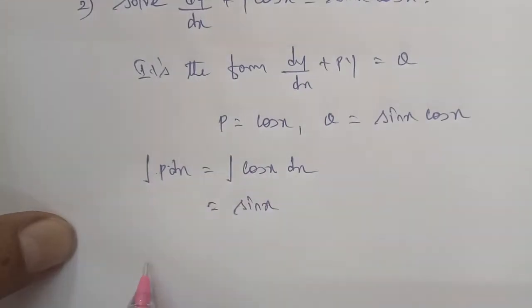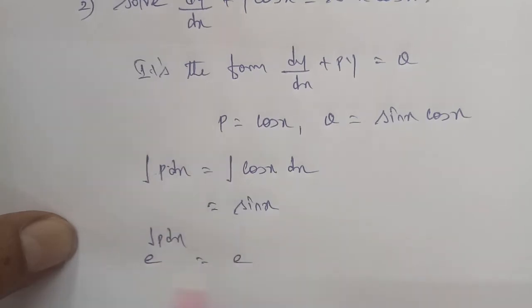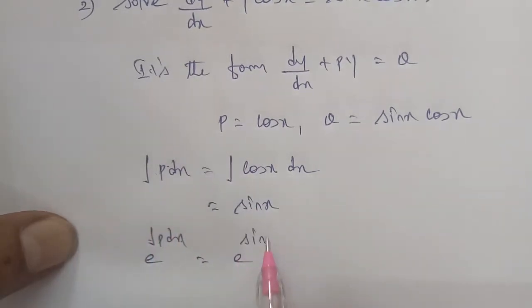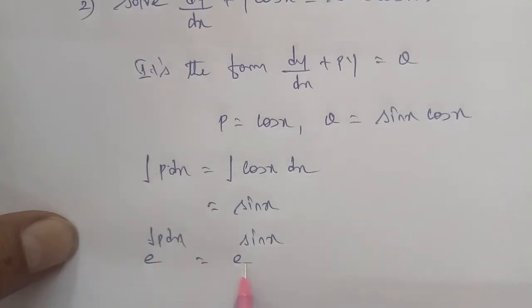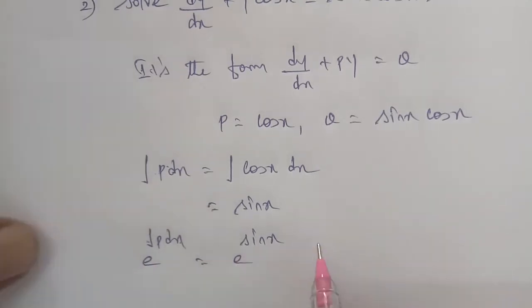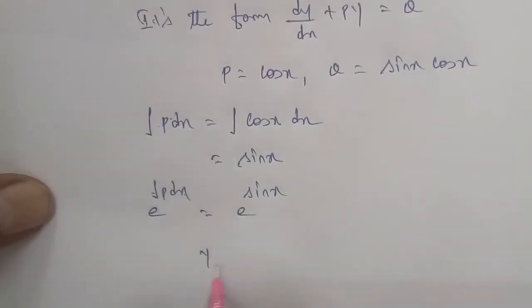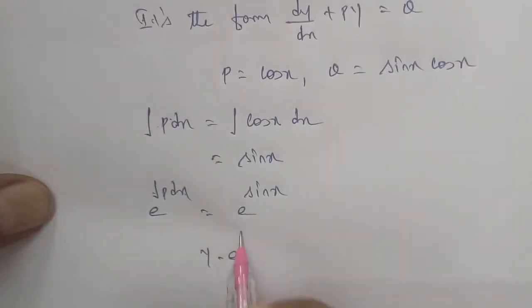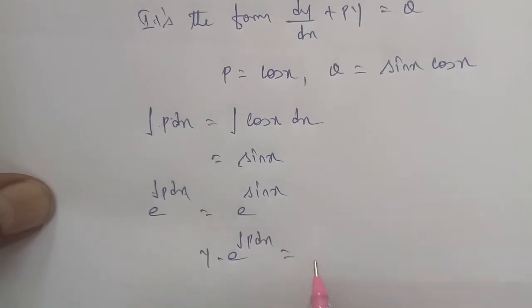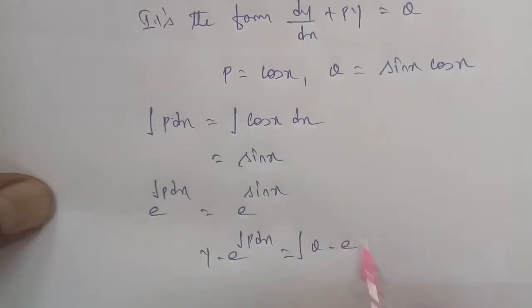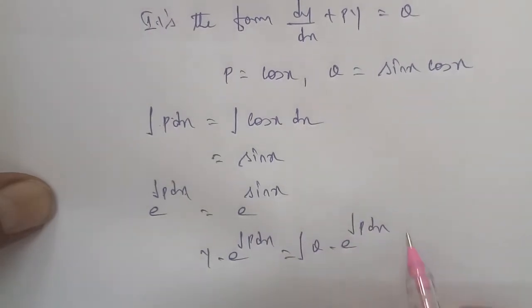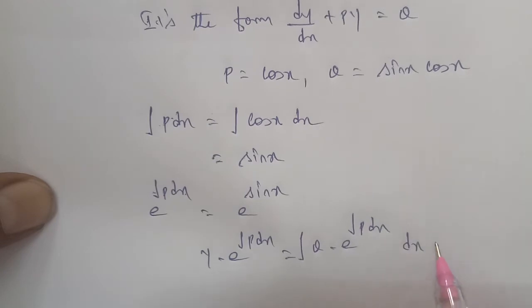Next formula: e power of integral P dx. So the integrating factor is e power of integral cos x dx, which gives e power of sin x. The solution formula is y into e power of integral P dx equals integral of Q into e power of integral P dx, dx plus C.